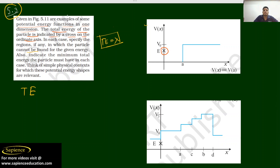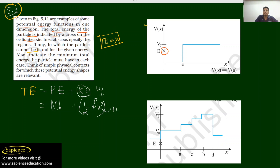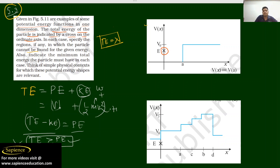Total mechanical energy consists of two types of energy: potential energy plus kinetic energy. Kinetic energy is (1/2)mv², and since mass is positive and v² is also positive, kinetic energy will always be positive. Therefore, total energy will always be greater than or equal to potential energy. This is the main important thing — potential energy cannot be greater than total energy.